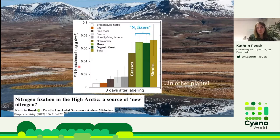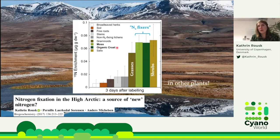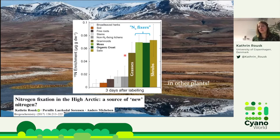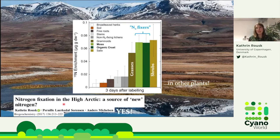Three days after we added the 15N label, we measured 15N enrichment. In green we have the nitrogen fixers — mosses, organic crust with free-living cyanobacteria, and lichens — and these were enriched with 15N, as expected. But quite surprisingly, other plants in the same system, like grasses and shrubs, were similarly enriched with 15N. That means this fixed nitrogen entered the soil nitrogen pool and was taken up by other plants. So to answer the question: is nitrogen fixation in the high Arctic a source of new nitrogen? The short answer is yes — it's quite important.